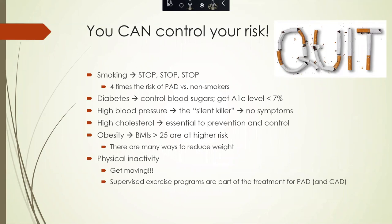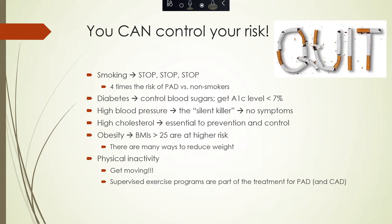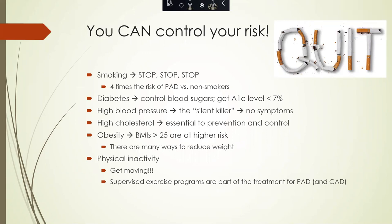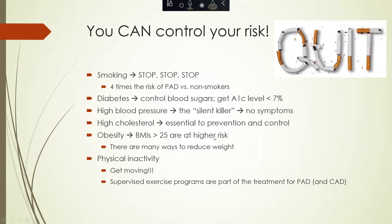Inactivity and being overweight — specifically having a BMI greater than 25 — increases your risk, and the higher your BMI, the more you are at risk. Inactivity is also a risk factor but is easily controlled by simply getting out and moving. There are also supervised exercise programs through physical therapy that are often part of the treatment for both peripheral arterial disease and coronary artery disease.